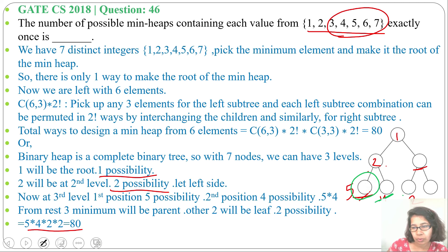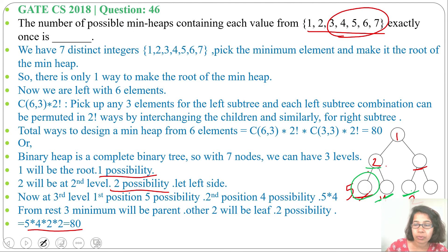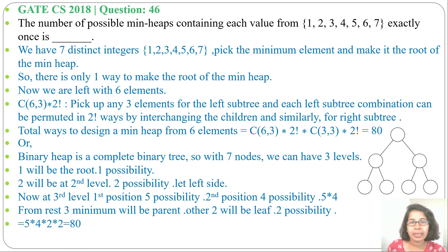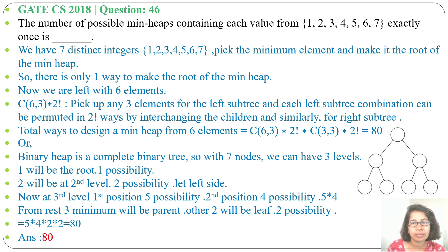So 5 for the third level first position, 4 for the third level second position, 2 for the third level third position arrangement, and another 2 for whether 2 is a left or right child — total 80. In any method you use, the answer is 80. If this lecture was helpful, please like and subscribe. Thank you.